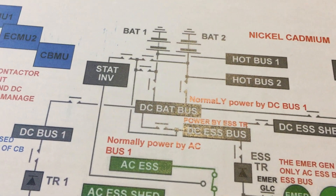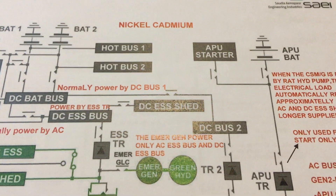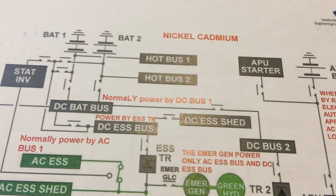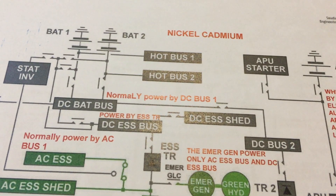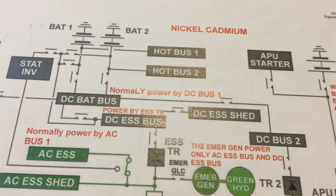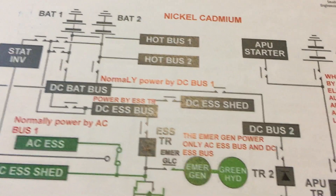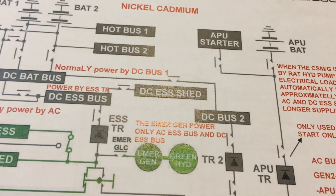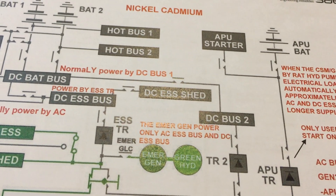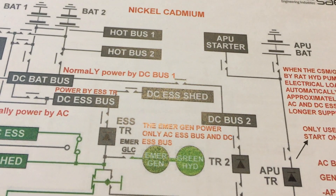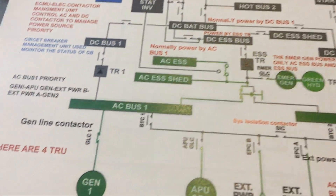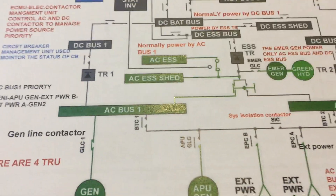We have battery number one, battery number two, and the APU battery. Battery number one and battery number two are located in the avionics compartment. The APU battery is located in the bulk compartment.